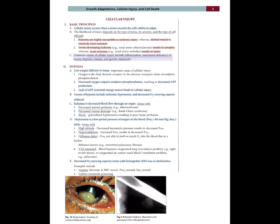Cellular Injury — Basic Principles: Cellular injury occurs when a stress exceeds the cell's ability to adapt. The likelihood of injury depends on the type of stress, its severity, and the type of cell affected. Neurons are highly susceptible to ischemic injury, whereas skeletal muscle is relatively more resistant. Slowly developing ischemia — for example, renal artery atherosclerosis — results in atrophy, whereas acute ischemia — for example, renal artery embolus — results in injury. Common causes of cellular injury include inflammation, nutritional deficiency or excess, hypoxia, trauma, and genetic mutation.